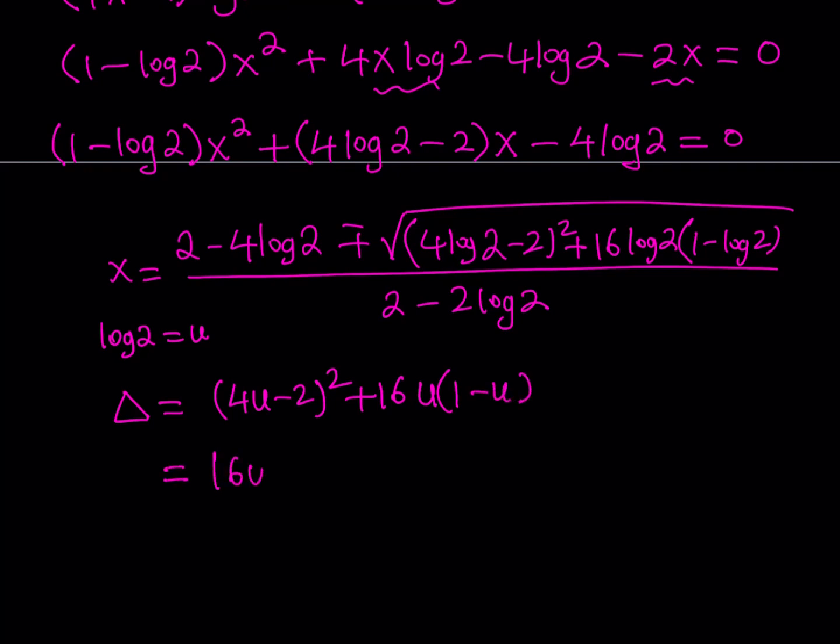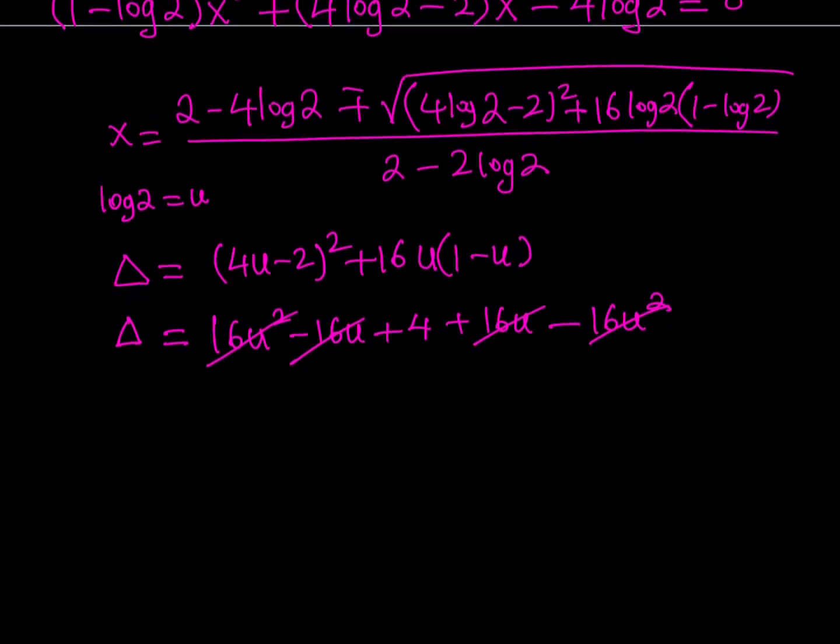Let's simplify the discriminant. This is going to be 16u² - 16u + 4, plus 16u - 16u². Now, something interesting happens when you're trying to find the discriminant here because the 16u² cancels out and the 16u cancels out, leaving you with a really nice expression: 4. Beautiful. So that means this is actually real simple to solve.